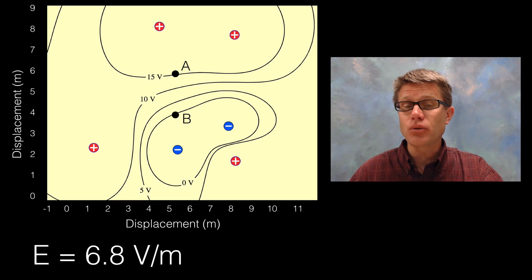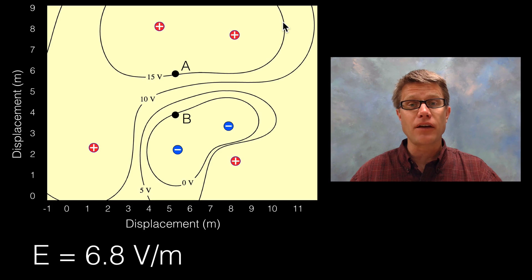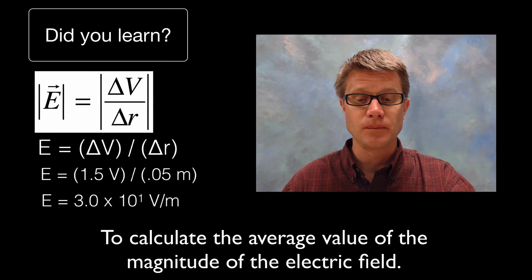Now a real common other question might be, let's say we put point A here and we put point C right here on that line. What would be the difference or the average value in the electric field? It's going to be 0. If you ever move along an iso line, it's going to be equal levels of potential.